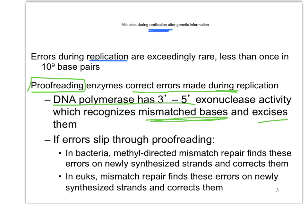If errors do slip through proofreading, there are other methods of fixing them. One of them is called methyl-directed mismatch repair, and it occurs a little bit differently in eukaryotes and prokaryotes. And we're going to talk about the mechanism in bacteria, because that's the one we know the most about.